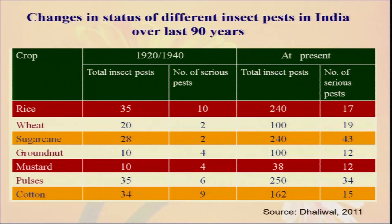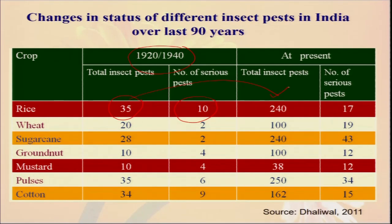There are some adverse effects of too much application of chemical insecticides and fungicides. If you look at the changes in the world over the last 90 years — in 1920 and 1940, when there was no commercial agriculture as such, the total number of insect pests for rice was 35 and the serious pests were 10. But now the total insect pests have increased from 35 to 240, and the serious pests have also increased.